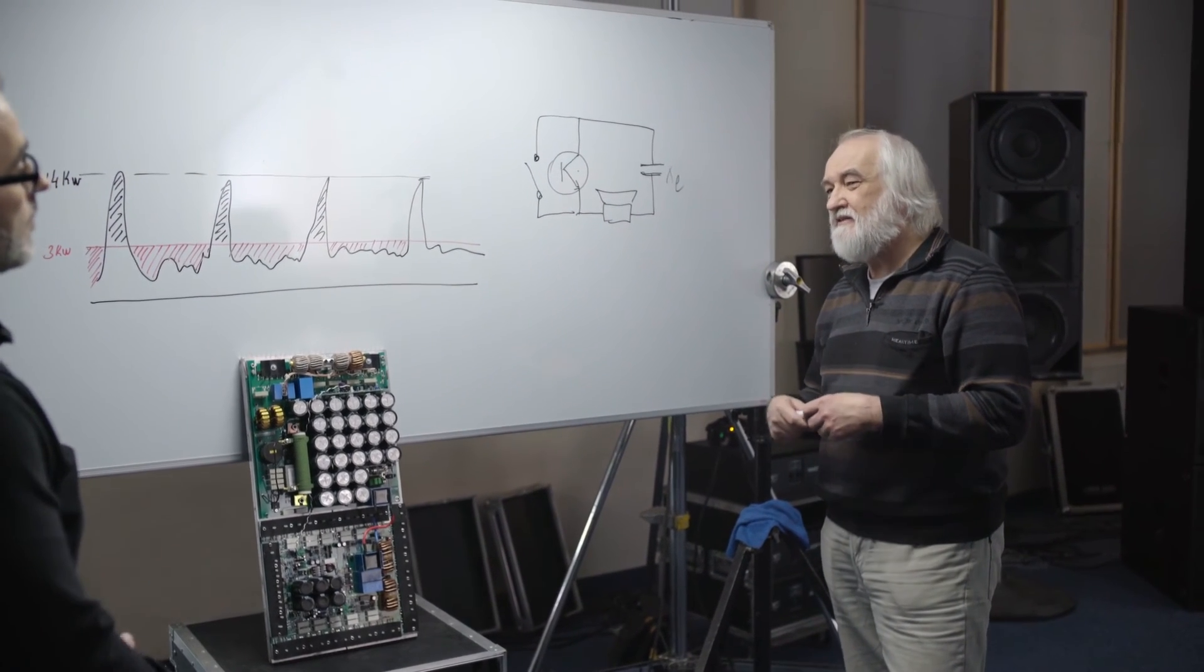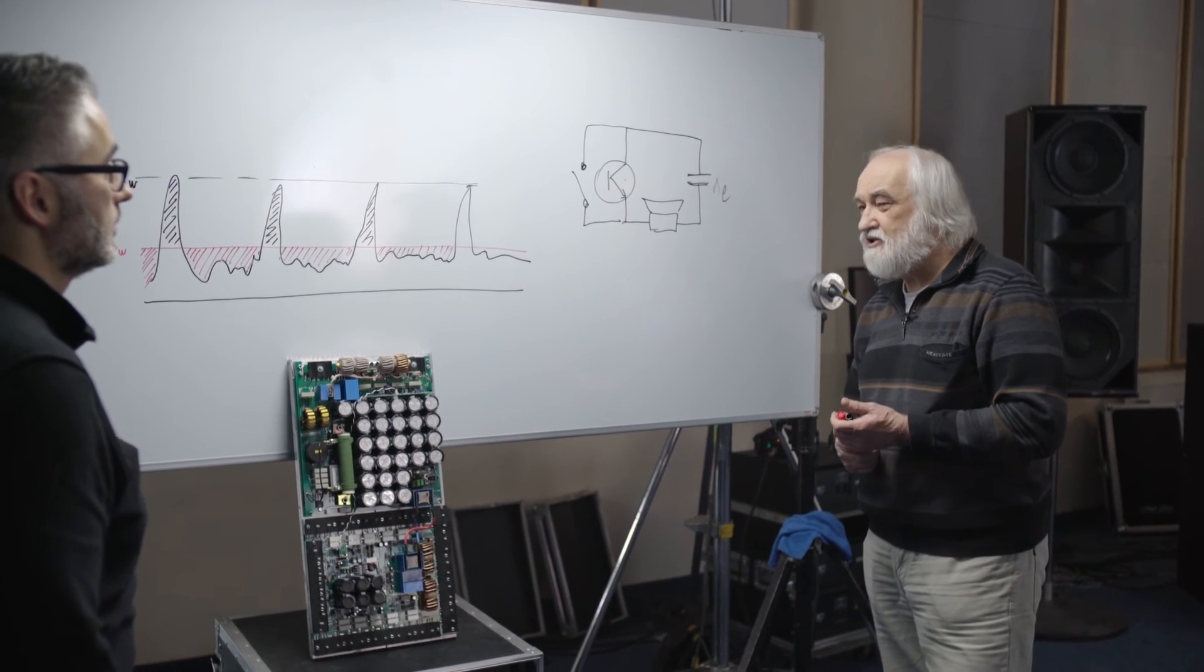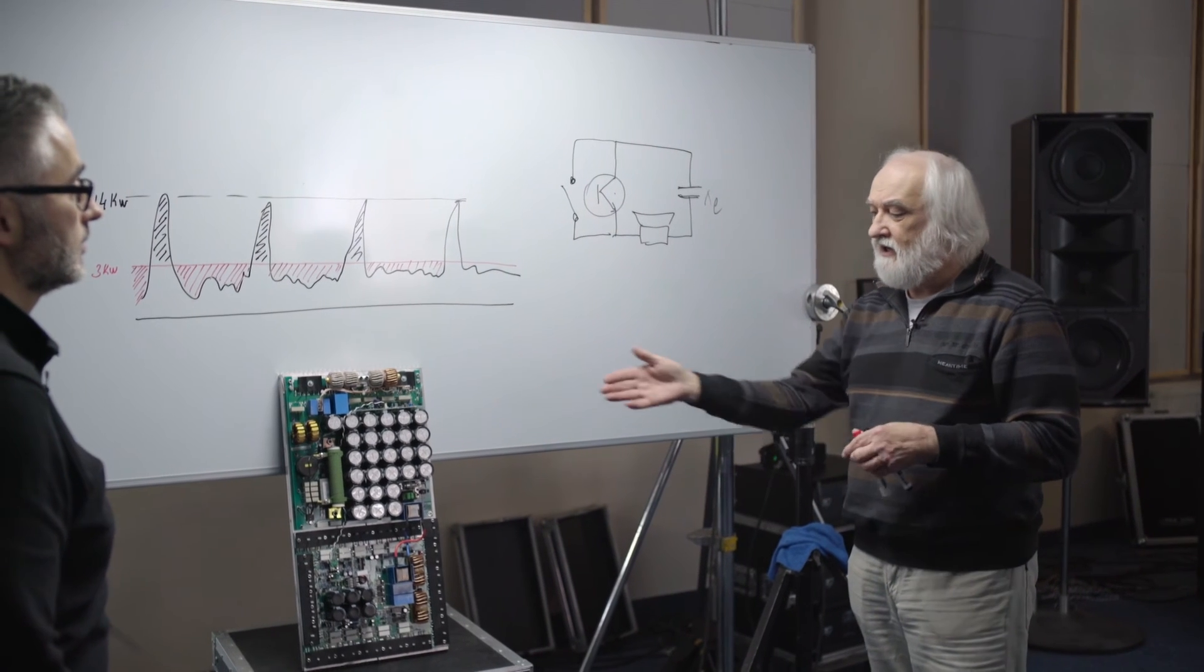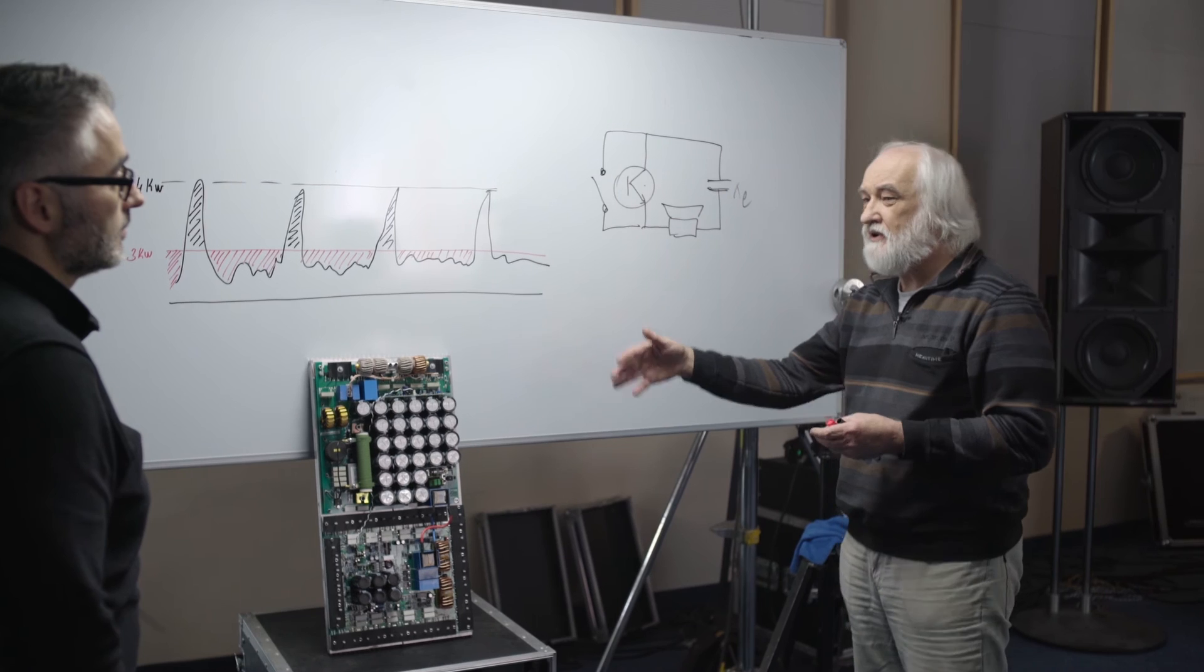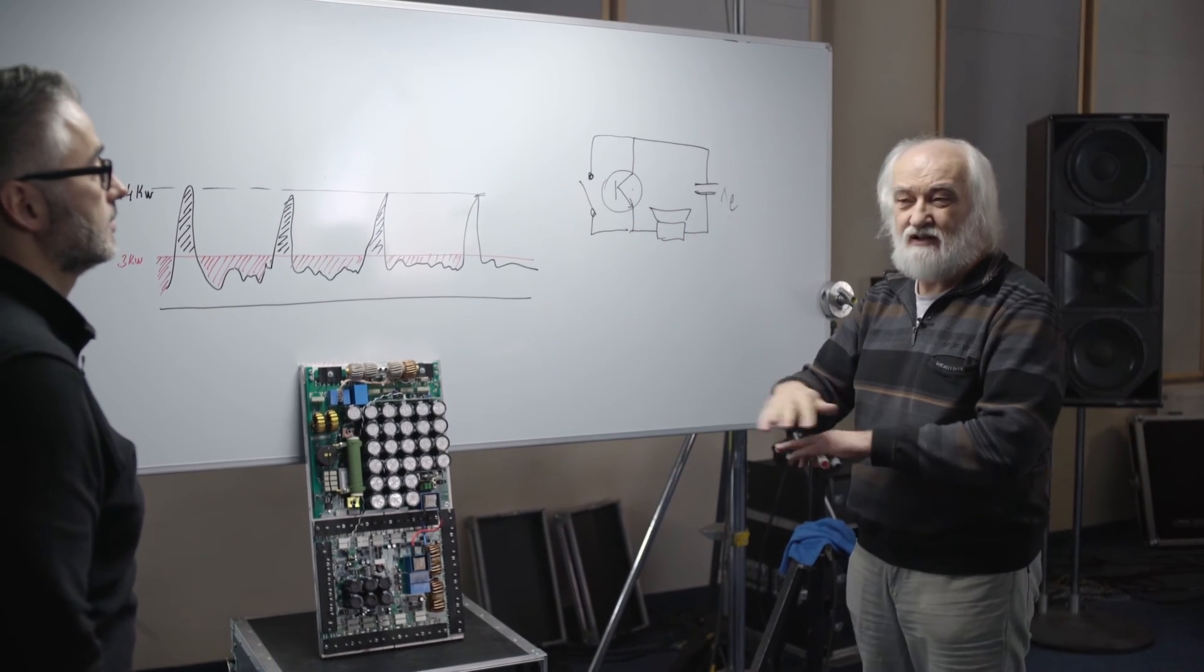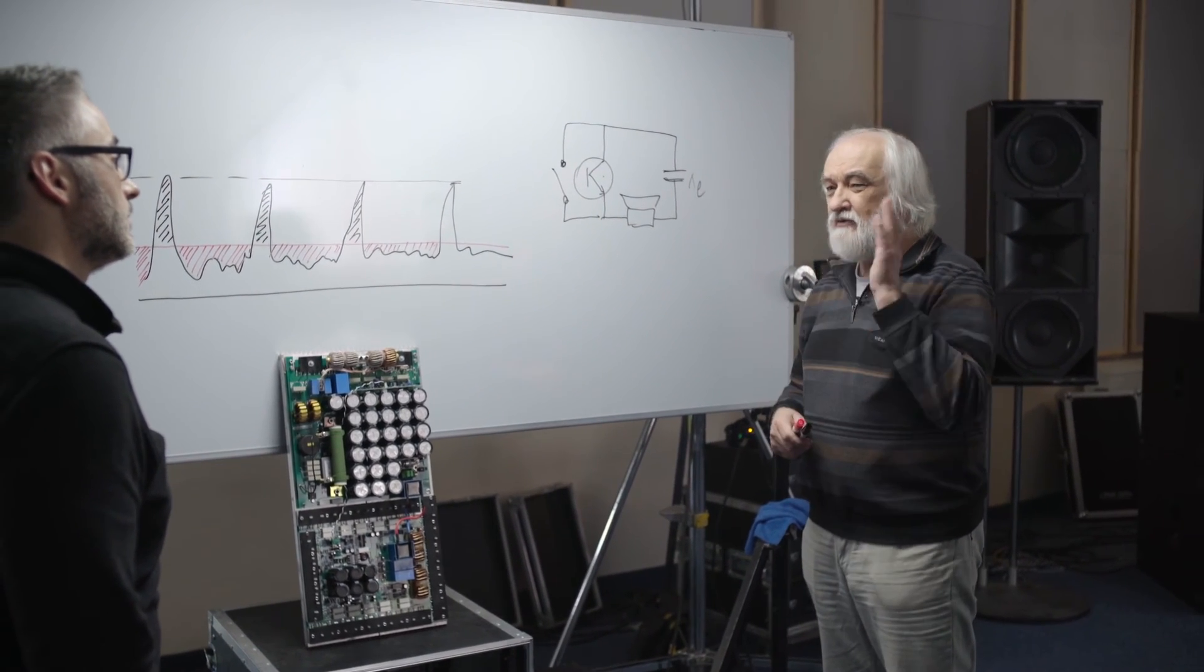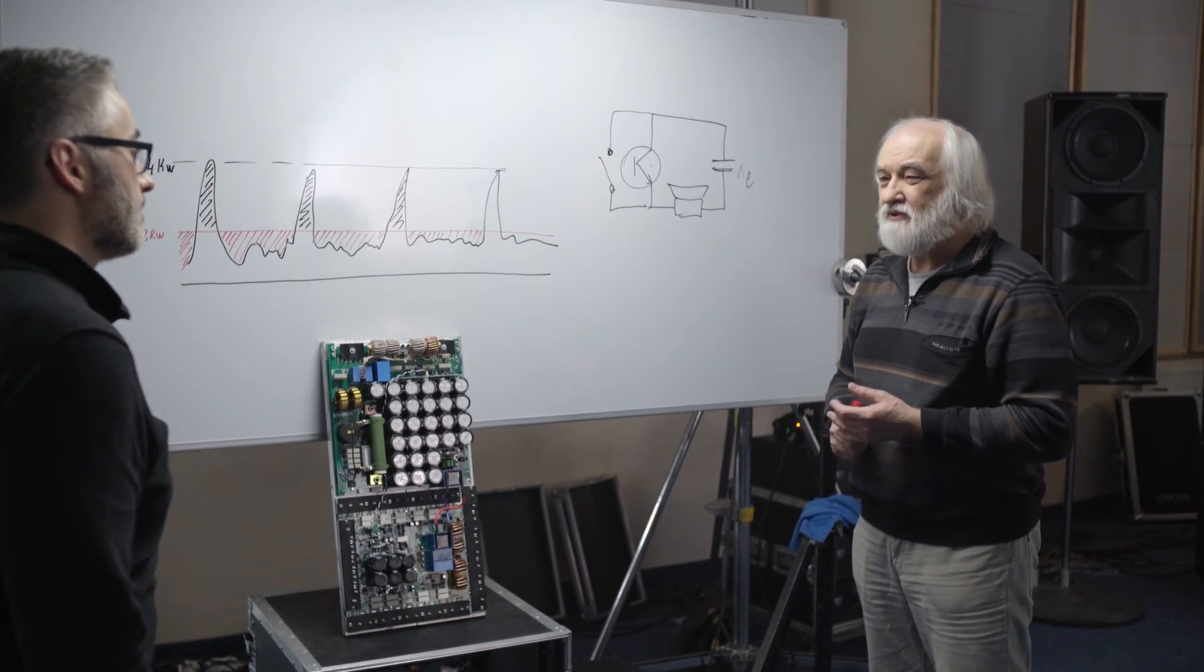But the new amplifiers which we have, they have a special system on the primary of the transformer. And the same thing on the VHD5, the amplifiers, they run from 190 up to 270 volts. Same power on the output.